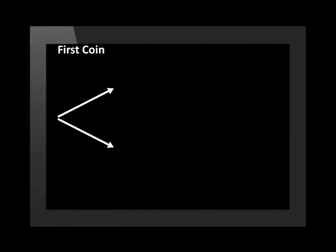We start by drawing two branches to represent the first outcomes, where H is heads and T is tails. The first coin can come up heads with a probability of one-half, or tails with a probability of one-half. Remember, the sum of the probabilities of the two branches must always add up to one. Because we are dealing with independent events, the second coin can also come up either heads or tails, irrespective of what the first coin landed on.